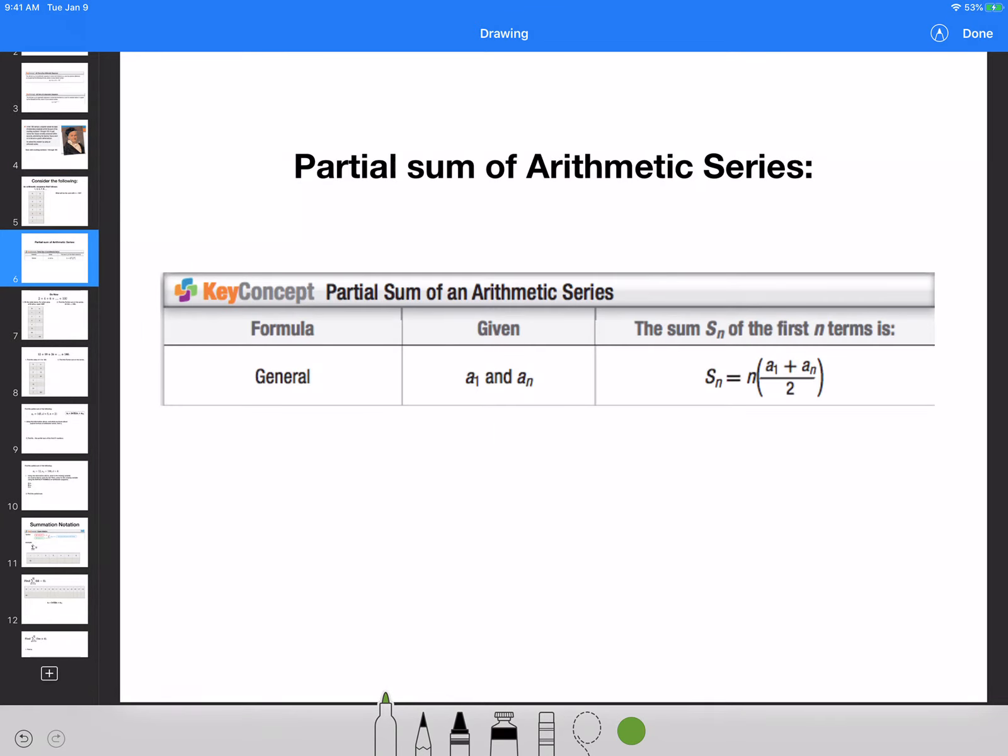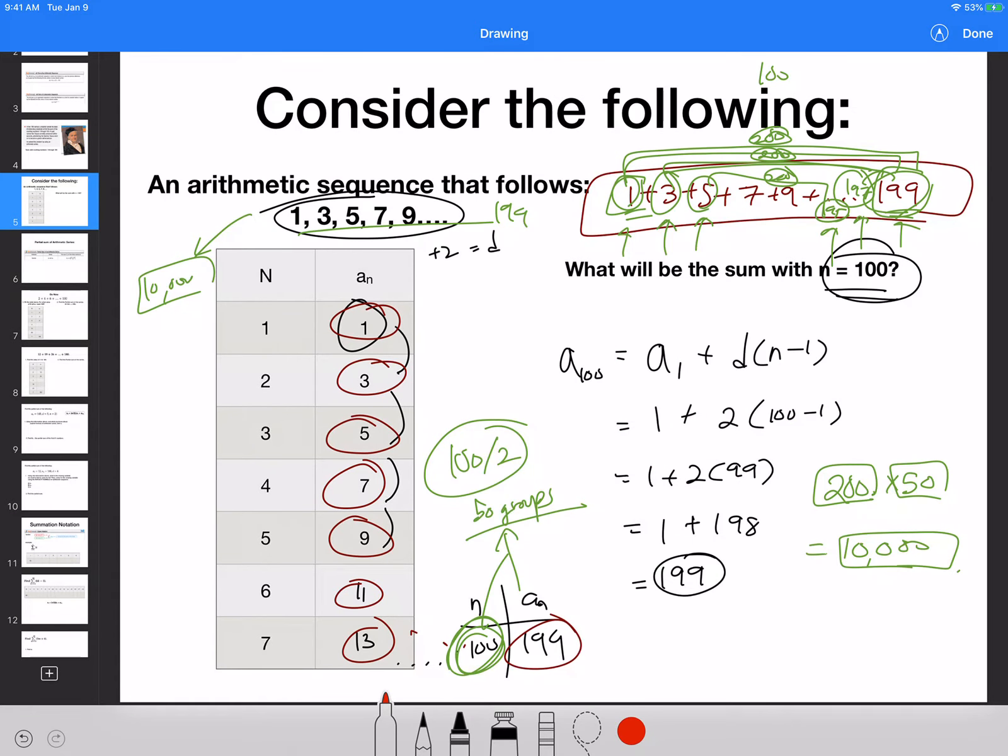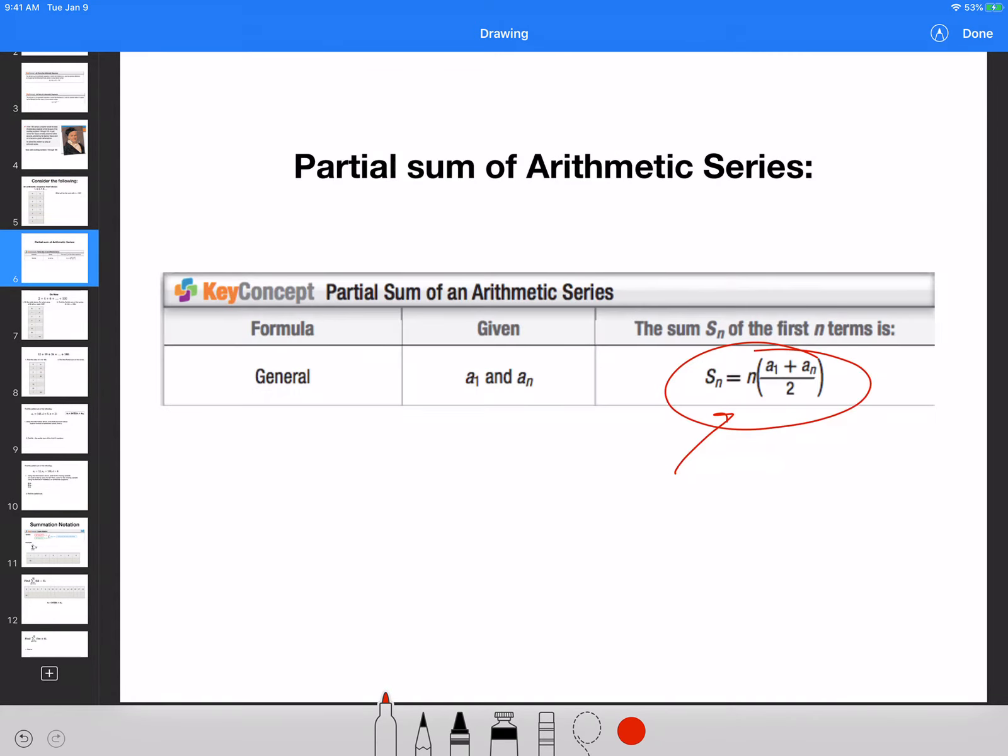So here's the formula that I want you guys to remember. Now, instead of really just memorizing this formula, think about what we just did here. We added the first and the last number together. That is this right here: a sub 1 plus a sub n. And that gave us 200, right?